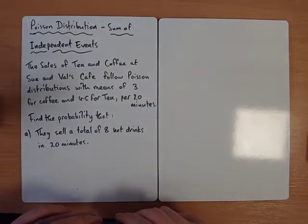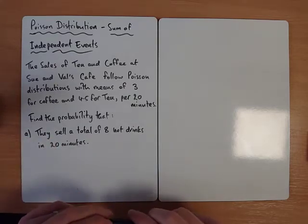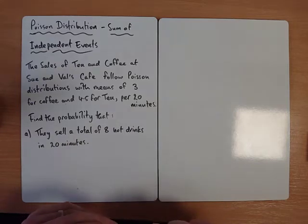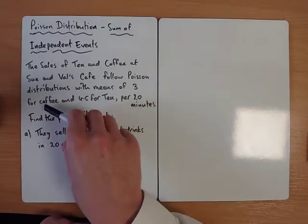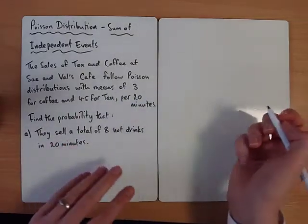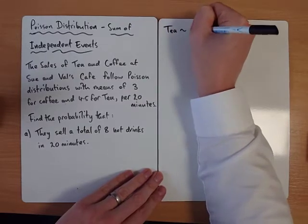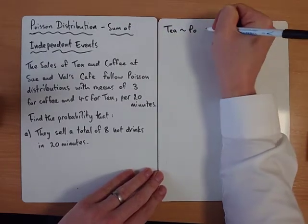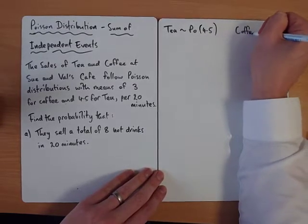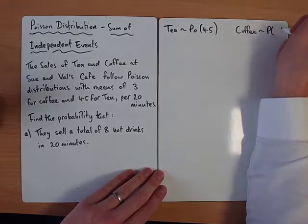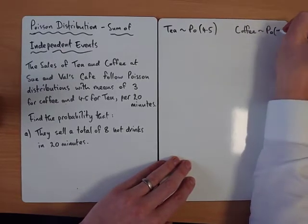In this example, we're thinking about the sale of tea and coffee at Sue and Val's Café. We know that tea follows a Poisson distribution with an average of 4.5 per 20 minutes. Coffee has got an average of 3 per 20 minutes. So tea would follow Poisson with an average of 4.5, coffee would follow Poisson with an average of 3.